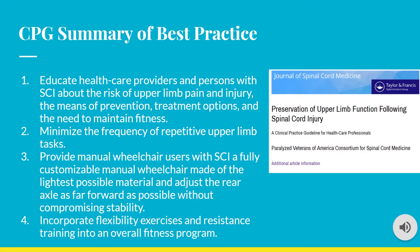Before discussing specific interventions, here is a summary of best practice from the CPG in the Journal of Spinal Cord Medicine for preserving upper limb function following SCI. We should educate healthcare providers and persons with SCI about the risk of upper limb pain and injury, means of prevention, treatment options, and the need to maintain fitness. We should minimize the frequency of repetitive upper limb tasks such as repeated overhead reaching, provide a fully customizable lightweight manual wheelchair with the rear axle as far forward as possible, and incorporate flexibility exercises and resistance training into an overall fitness program.